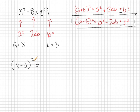Let's factor out x minus 3 squared to see if we get the same thing that they're giving us in the problem. So x minus 3 squared is just x minus 3 times x minus 3.